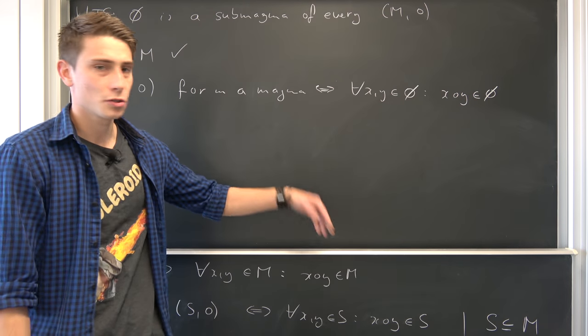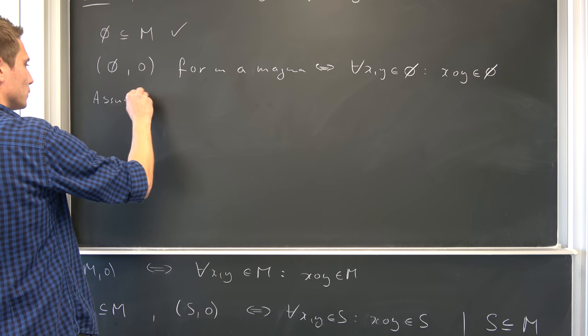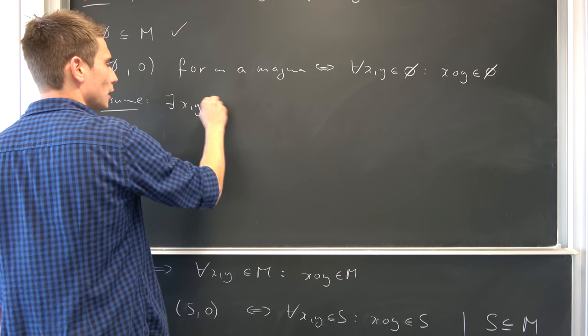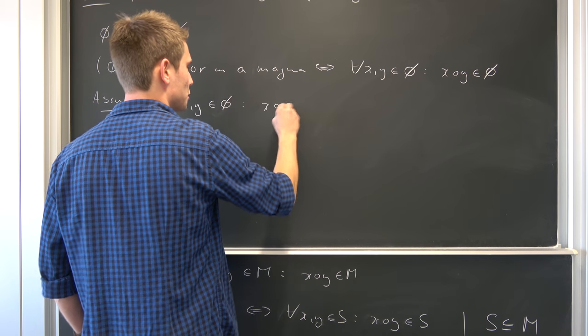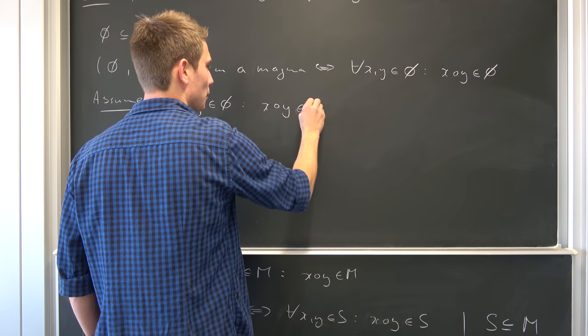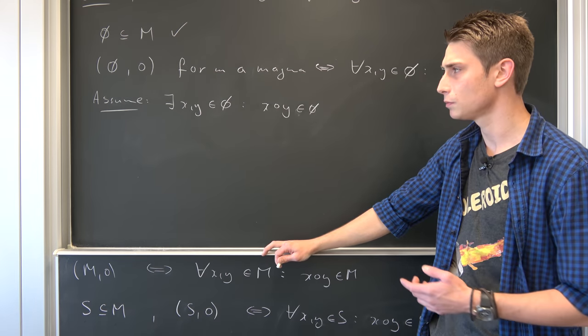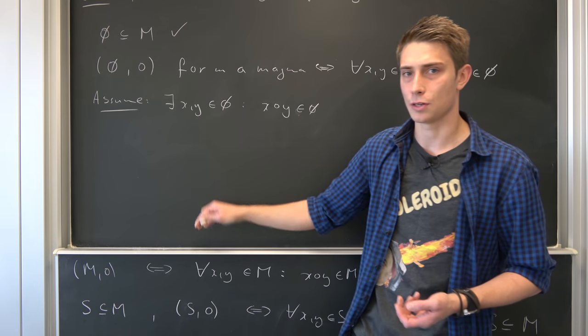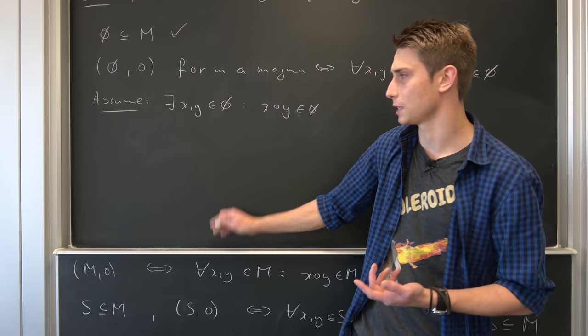Here comes a little proof by contradiction, you can say. Why not suppose the opposite? Assume that there is some X and Y element of the empty set such that X composition with Y is once again element of the empty set. We are going to suppose this, but you see there are no elements of the empty set which could fulfill this condition.